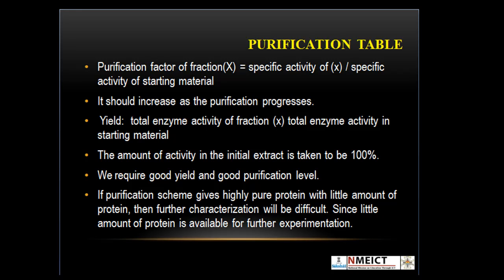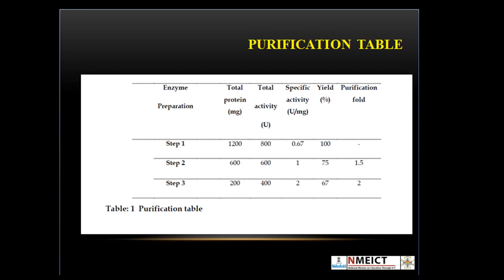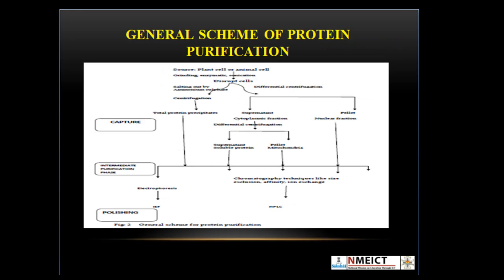You can evaluate the protein purification table from the given diagram. You can see that after each step the specific activity increases. Generally, if you increase the number of steps then yield will decrease, and after each step the purification fold increases. This is a general diagram explaining the protein purification scheme from both plant and animal sources.